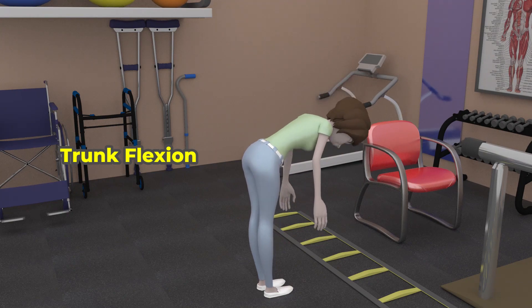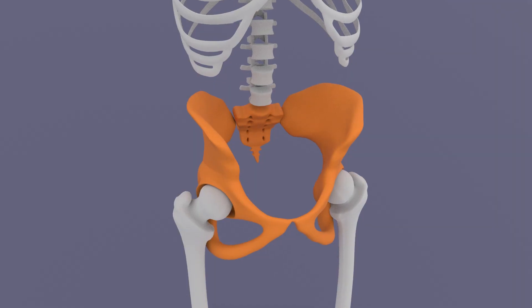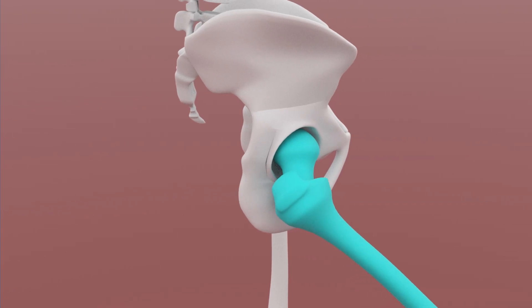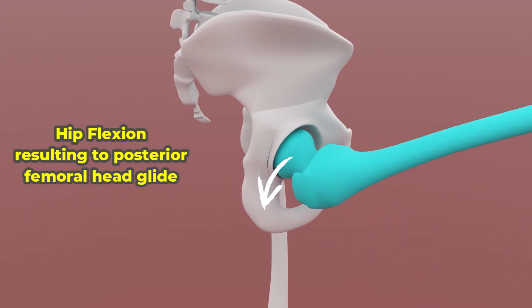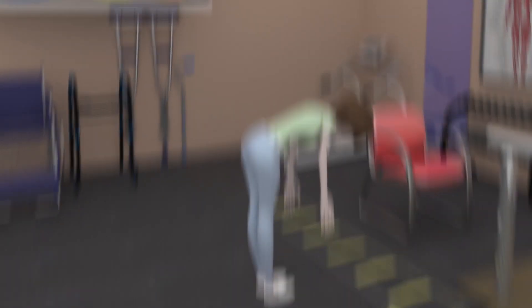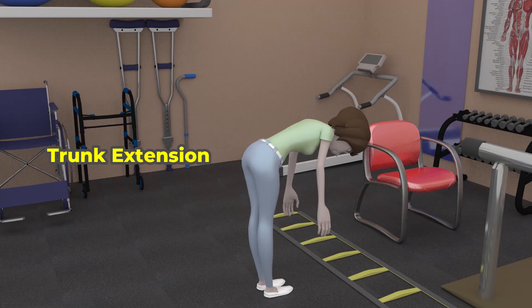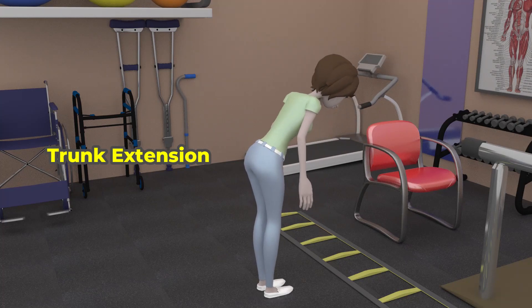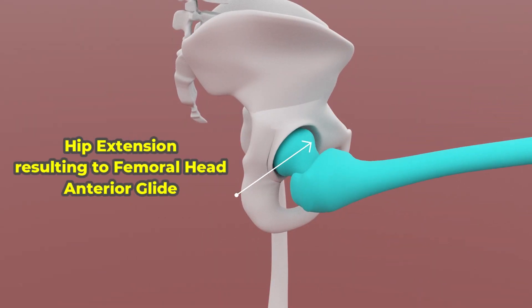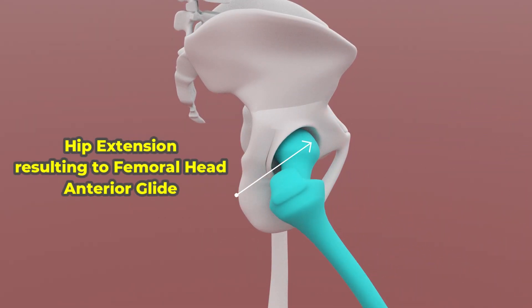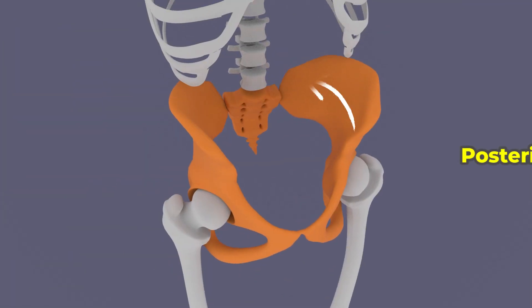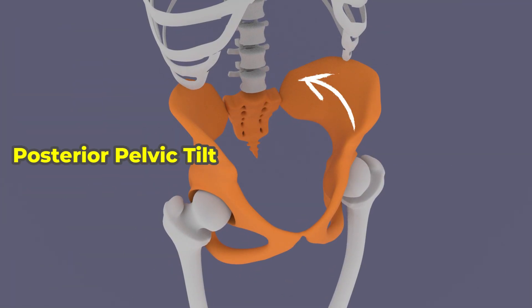During trunk flexion, when a person tries to touch the toes, the pelvis tilts anteriorly while the hip flexes, resulting in a femoral head posterior glide. During trunk extension, when a person comes back to standing, the hip extends resulting in a femoral head anterior glide. Once maximum available range is reached, then the pelvis tilts posteriorly.